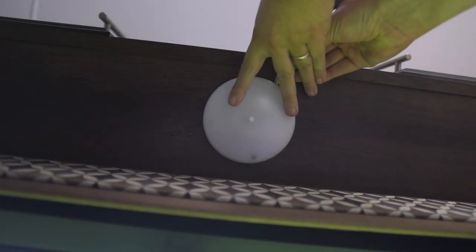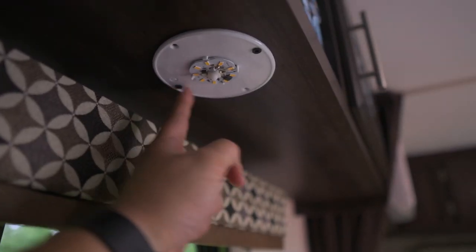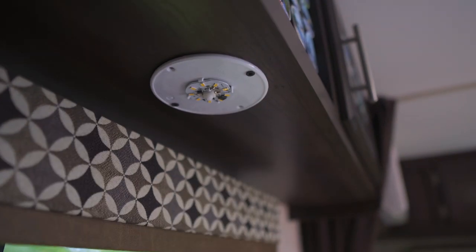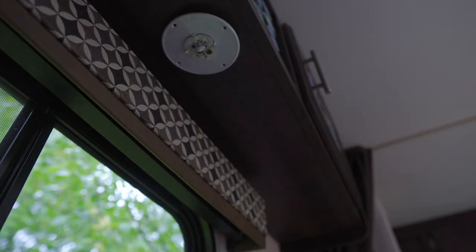So the first thing we want to do is pop this original light off. Now that we got the top off, there's two screws right here that we have to take out. Right like that.